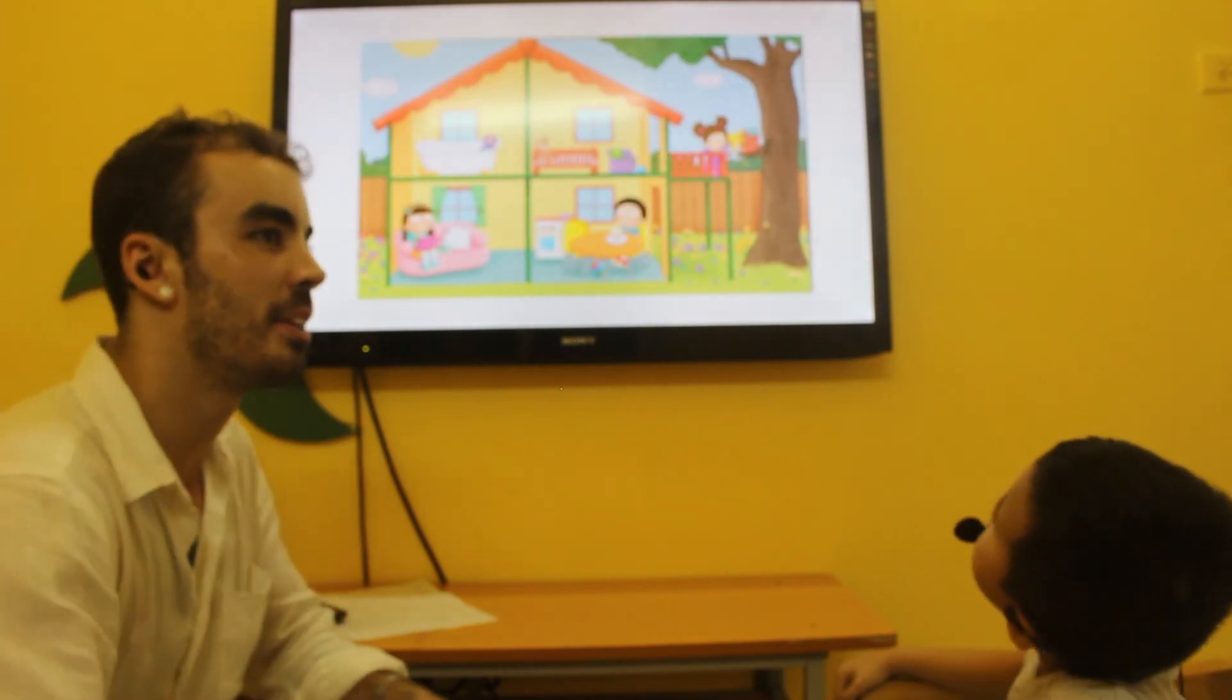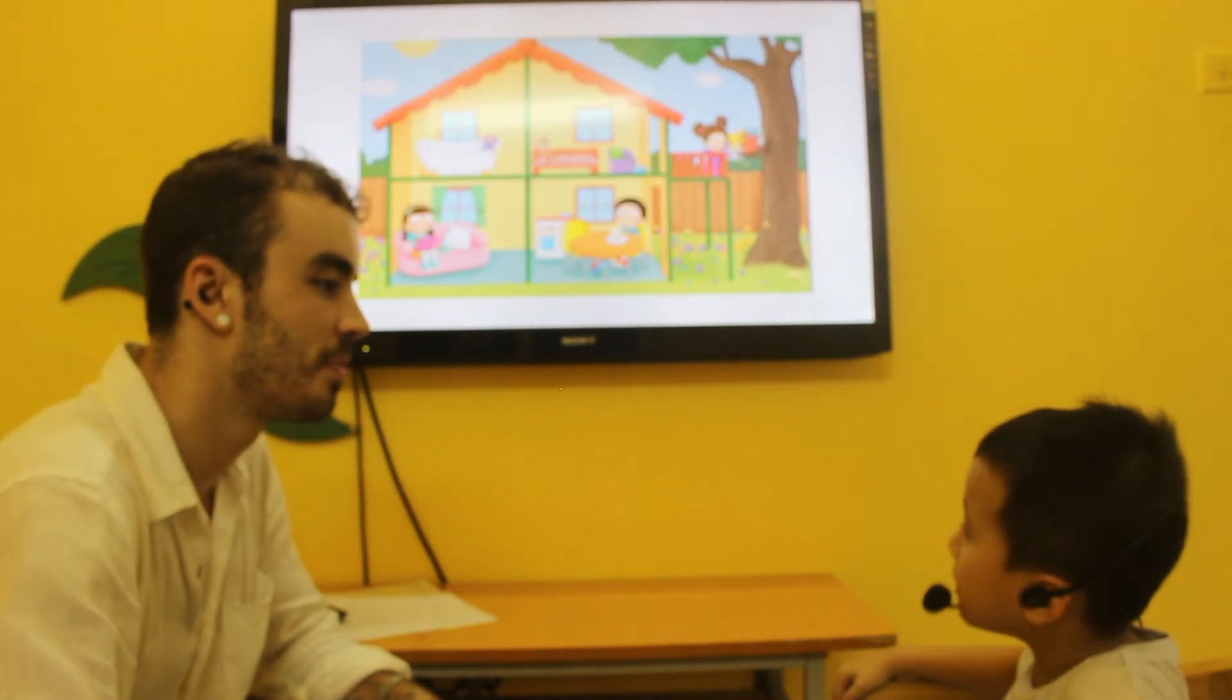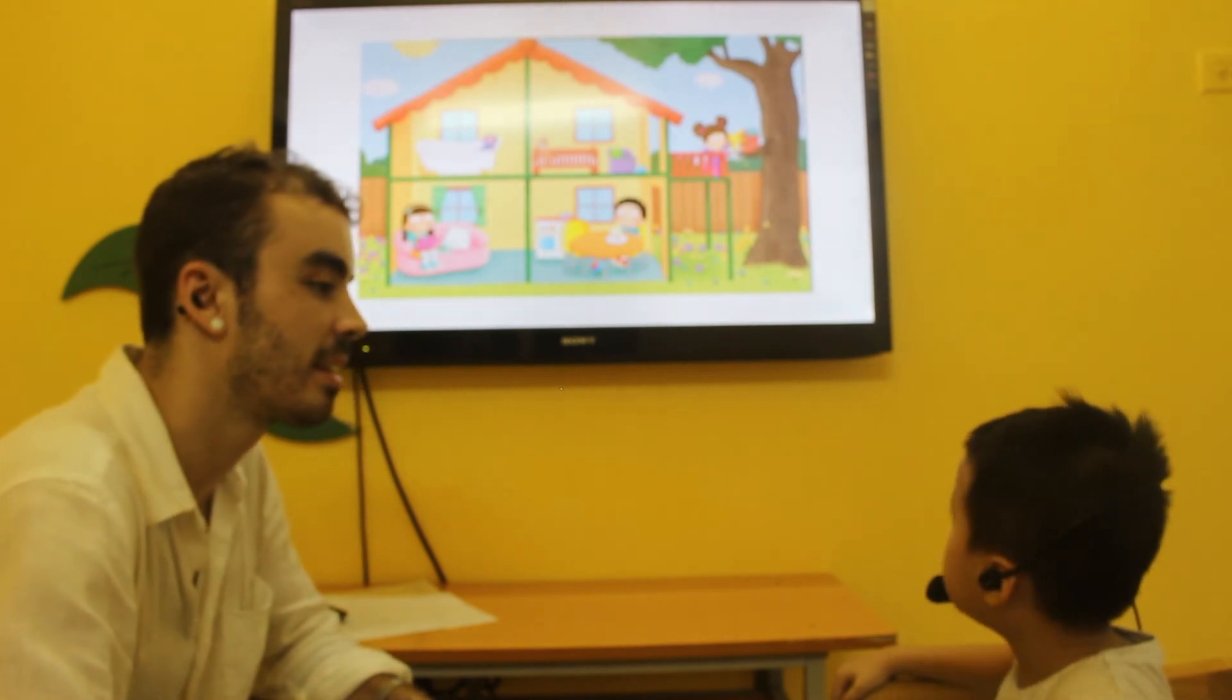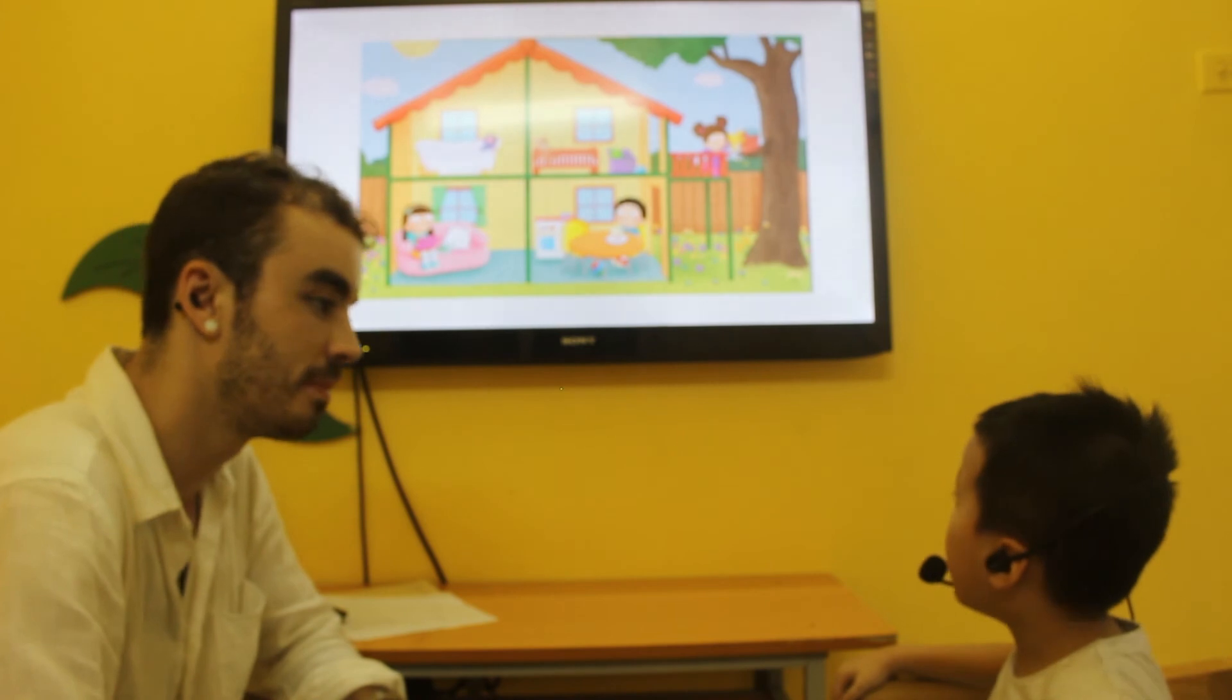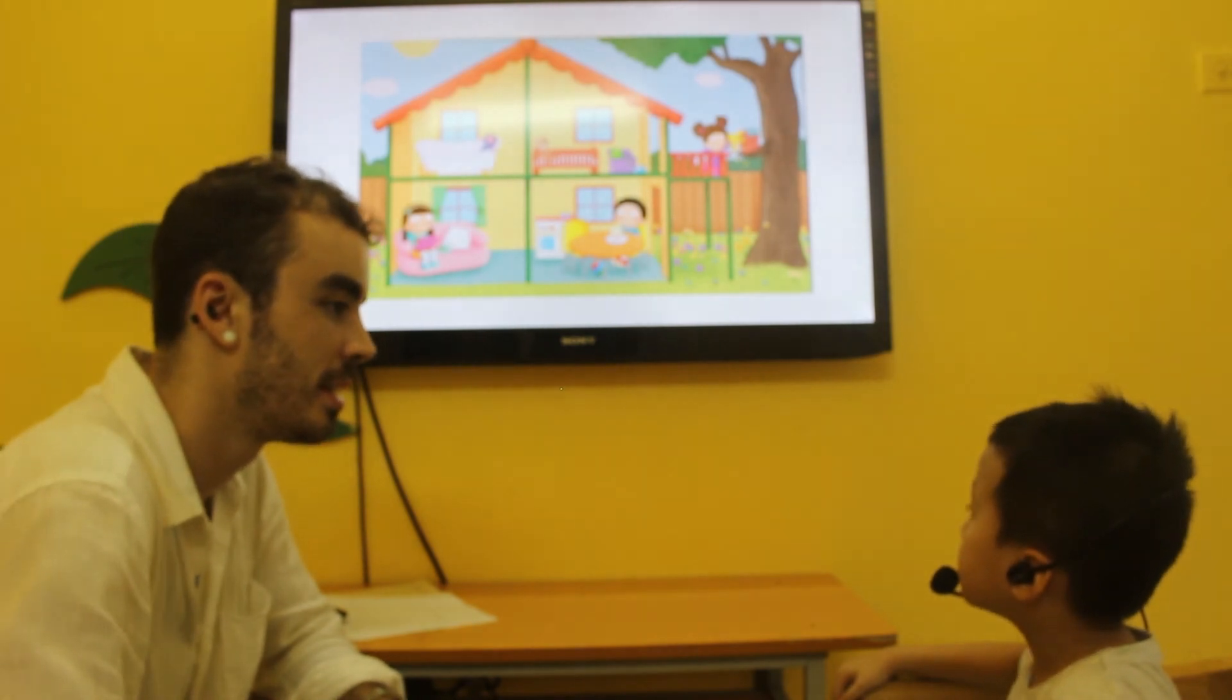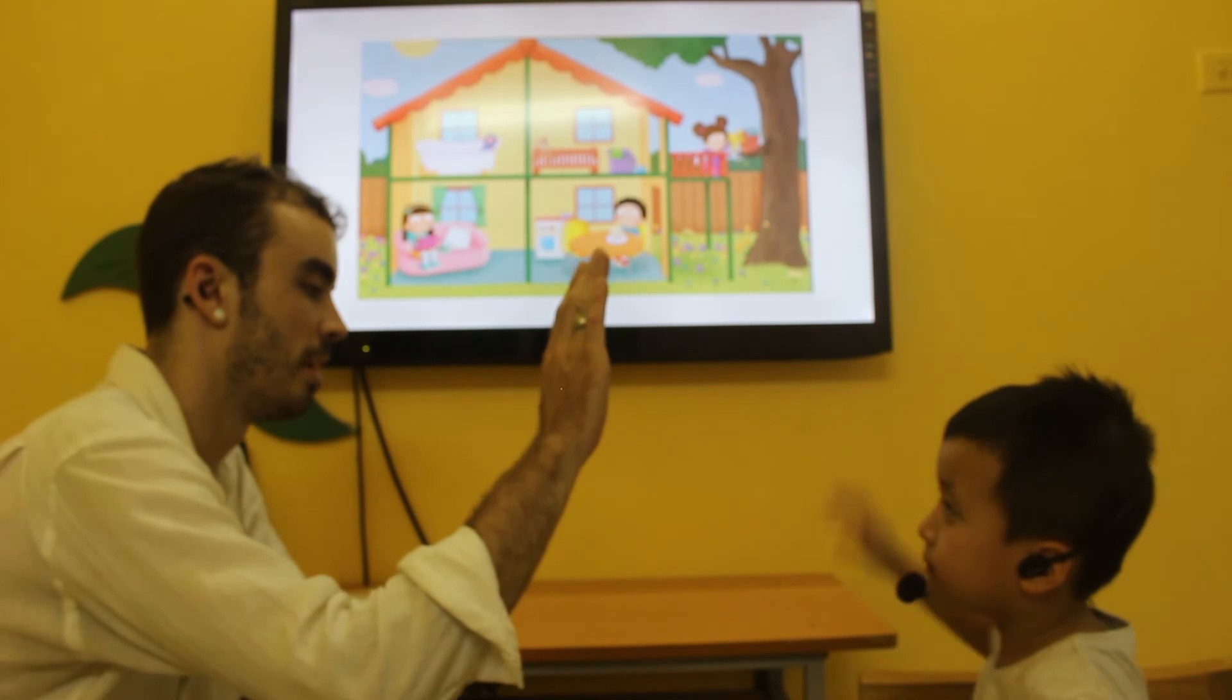What rooms can you see? I can bedroom. I can see. I see bedroom. Very good. I see bathroom. I see living room. I see kitchen. Awesome.